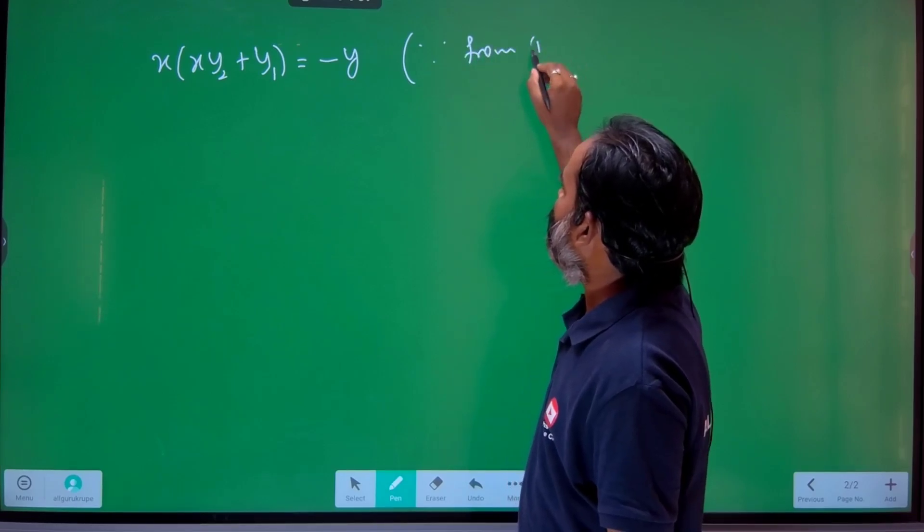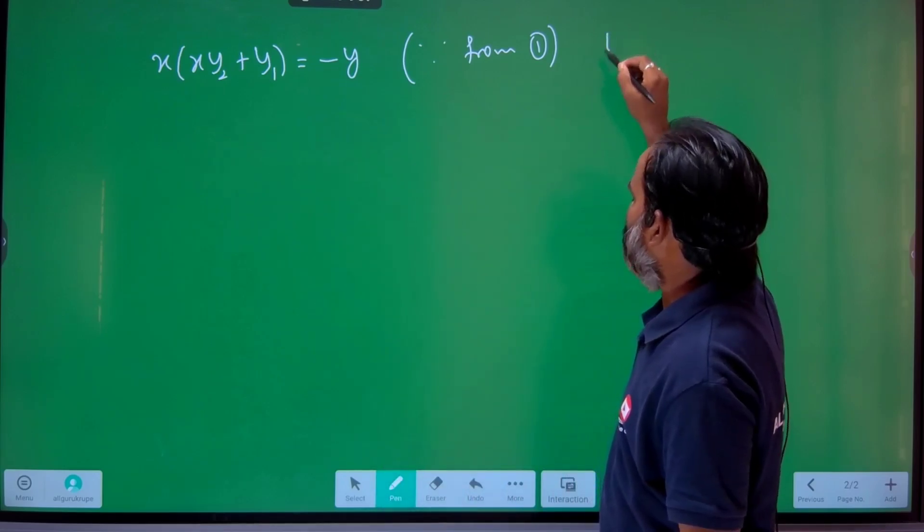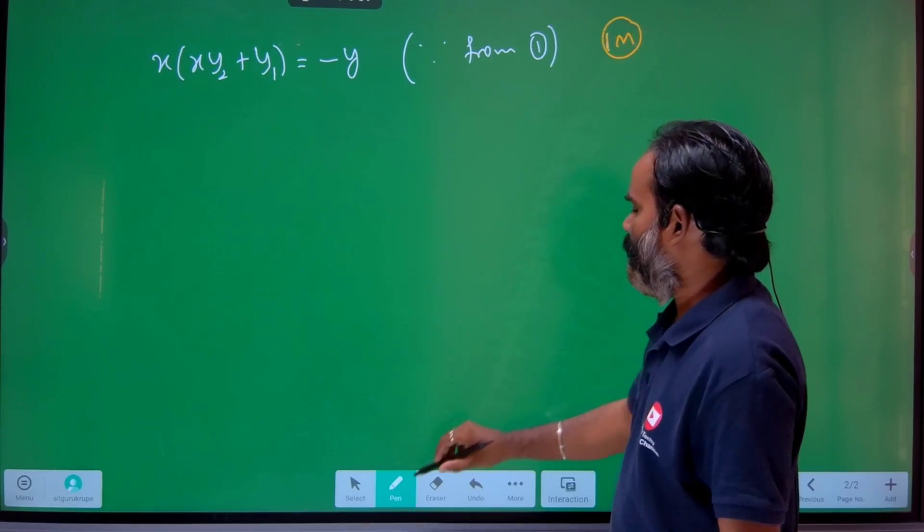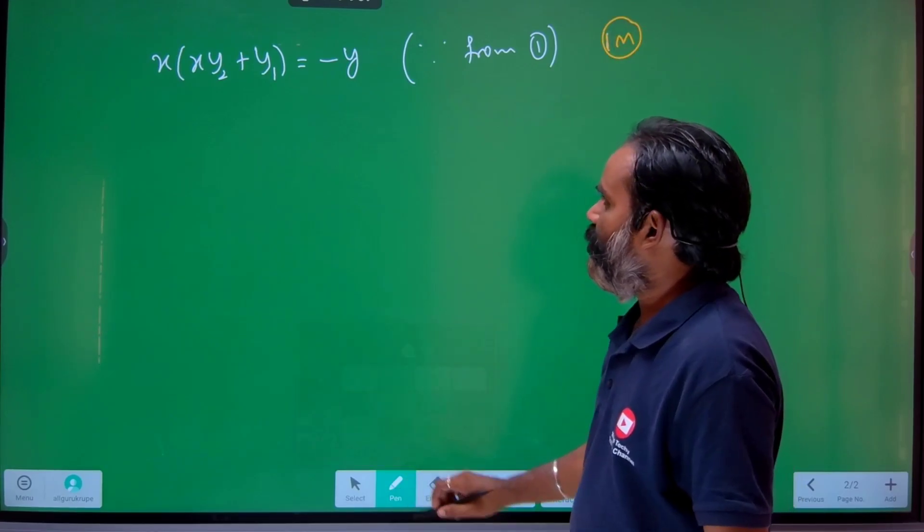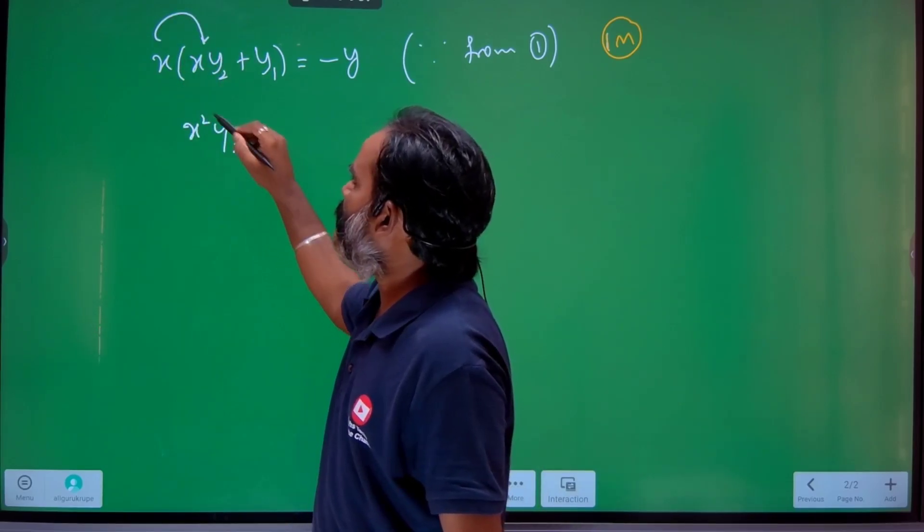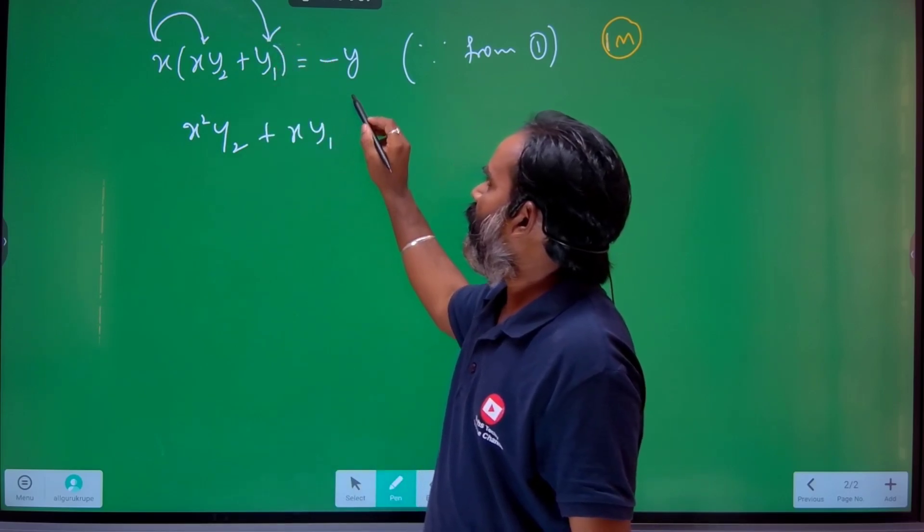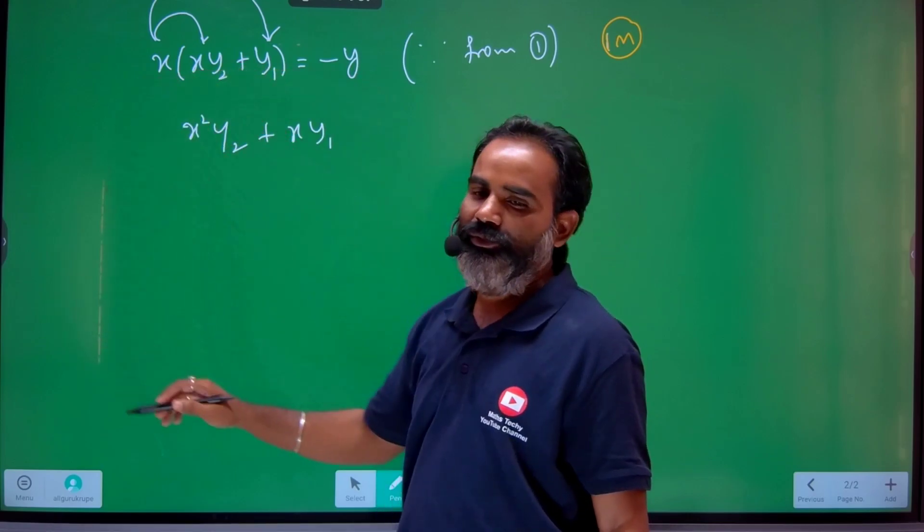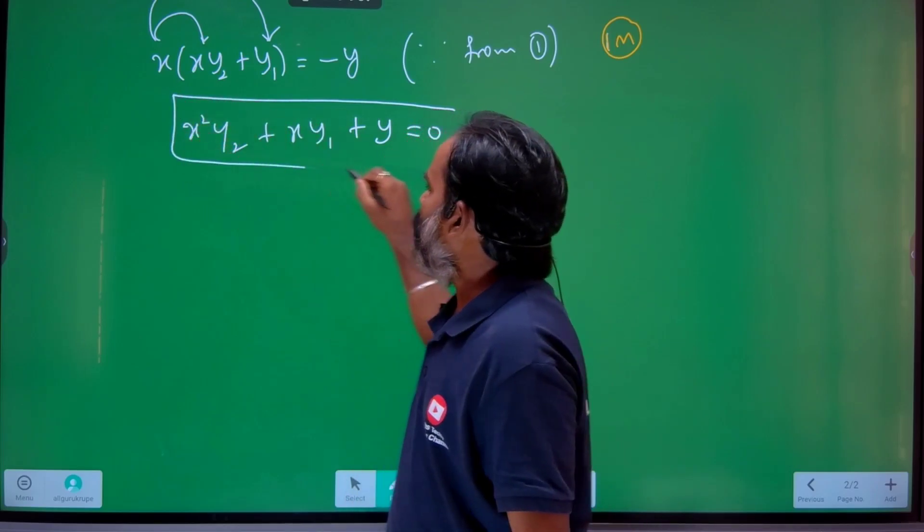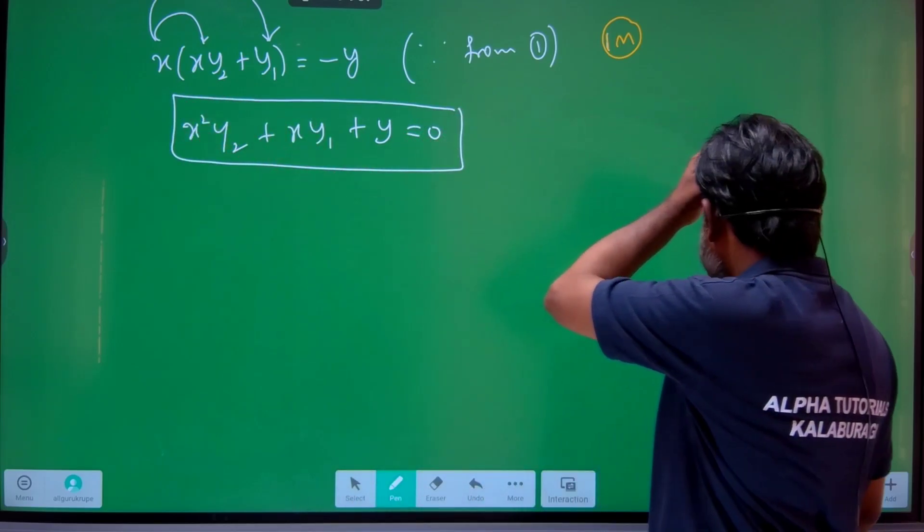From equation 1, you will get 1 mark here, total 4 marks here. Now multiply by x: this will become x²y₂. Multiply this, becomes xy₁. This -y becomes +y = 0. Hence proved. Check the required result: x²y₂ + xy₁ + y = 0.